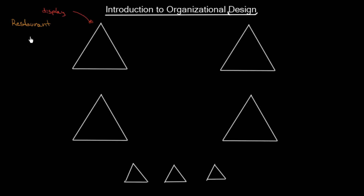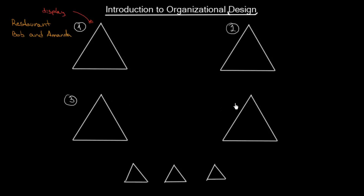The founders are going to be Bob and Amanda. We are going to have phases: an initial first phase, second phase, third, fourth, and fifth phase. You will see how the structure of the organization, the authority, and especially the position of Bob and Amanda — their tasks — how it evolves and how these are changing.